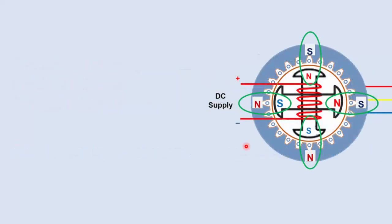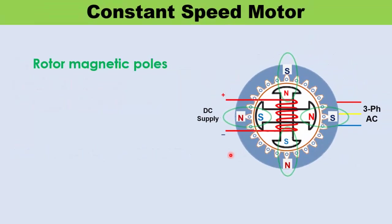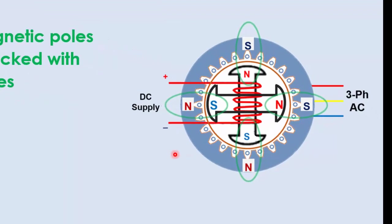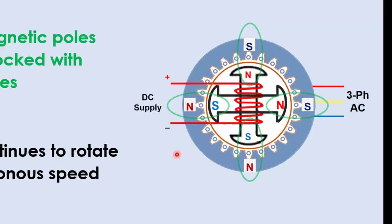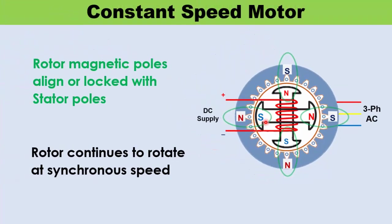Once the rotor reaches synchronous speed, rotor poles align with stator poles, which is often called magnetic locking. This synchronization or locking keeps the motor spinning without external prime mover at constant speed.